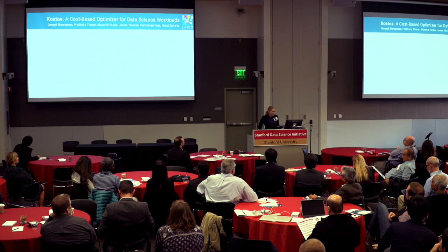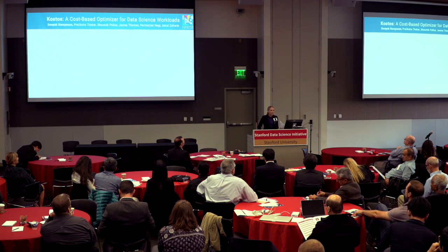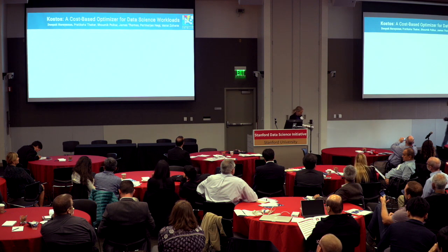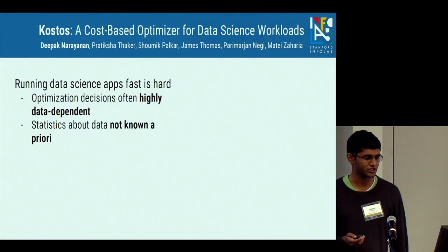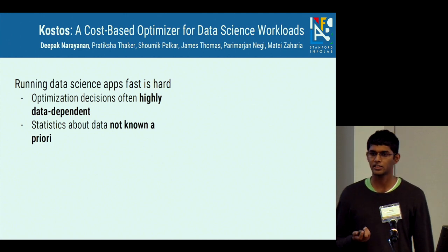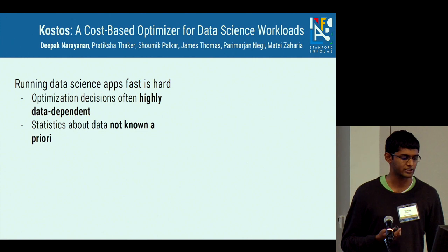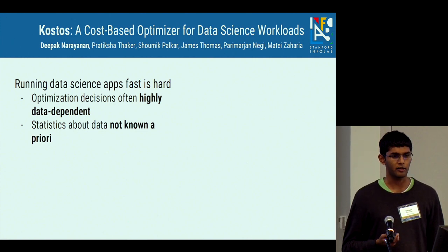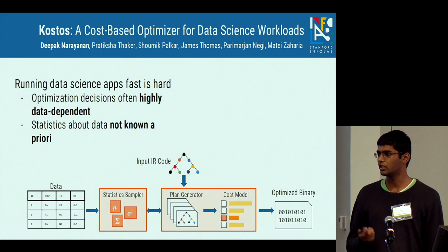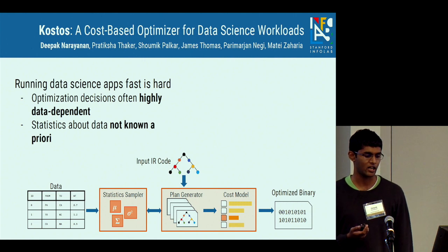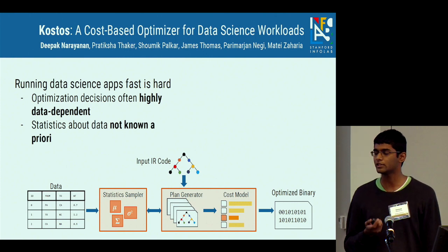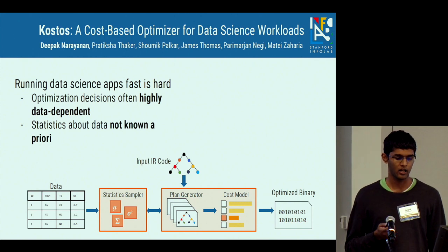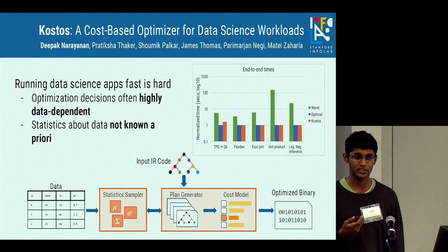Deepak Narayanan presents Costos, a cost-based optimizer for data science workloads. Optimizing data science workloads is challenging because decisions are highly data-dependent and statistics about the data are not known a priori. Costos has two components: a cost model that evaluates optimizations without running application code, and an adaptive statistics collector that determines which statistics to collect at runtime based on cost-benefit reasoning. Costos achieves speedups of up to 150x on various data science workloads.